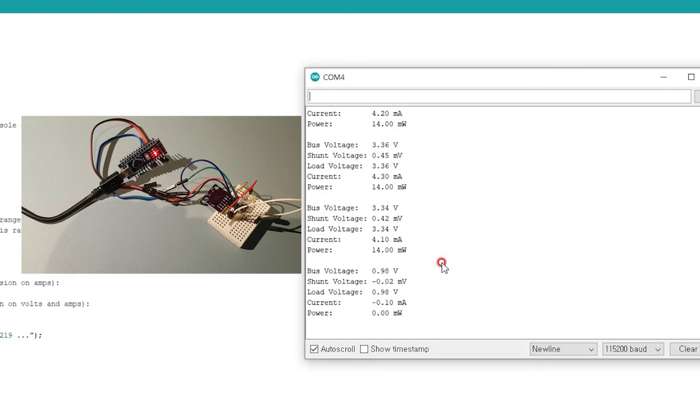If you are not able to see the printed value, make sure your baud rate is set to 115,200.